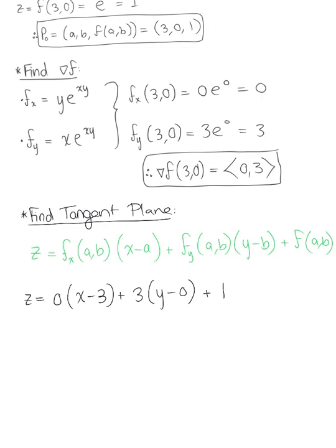And so simplifying here we see that the entire x component goes to 0 and we'll distribute 3 through to both terms. So we have z is equal to 3y plus 1.